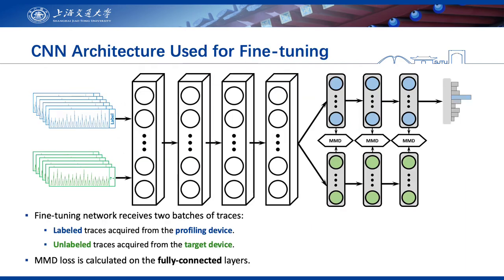As for the network used for fine-tuning, there are two main differences between classic CNN models and our architecture. First, our fine-tuning network receives two batches of traces for each training step: one batch of labeled traces acquired from the profiling device, and another batch of unlabeled traces acquired from the target device. The second difference is we have to decide where to calculate the MMD loss in our network. Previous works have shown that deep features transform from generic to task-specific as one goes up the layers of a deep network, so transferability tends to drop with increasing domain discrepancy. Therefore, we decide to minimize the MMD loss on the fully-connected layers.